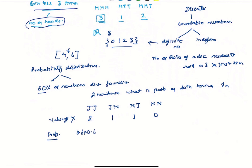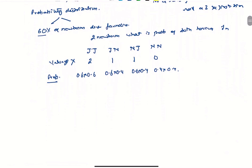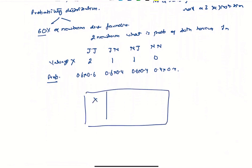The probability of one having jaundice and one not is 0.6 times 0.4, and similarly 0.6 times 0.4 for the other mixed case, and 0.4 times 0.4 for neither having jaundice. We create a table with X values 0, 1, and 2, and their corresponding probabilities: 0.16, 0.48, and 0.36.